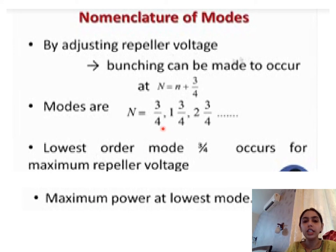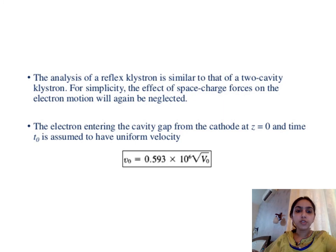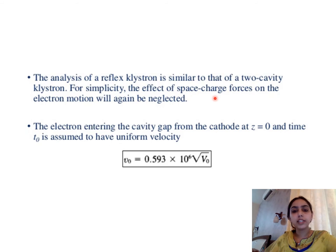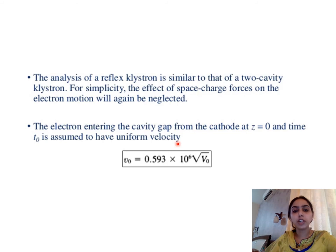Now for the analysis of reflex klystron: the analysis is similar to that of two cavity klystron. The same assumptions apply — for example, the effect of space charge is neglected. An important assumption is that electrons entering the cavity gap from the cathode at z = 0 and time t0 are assumed to have a uniform velocity. By equating potential energy and kinetic energy, we get the velocity V0 = 0.593 × 10⁶ √V0, an expression similar to that of the two cavity klystron amplifier.